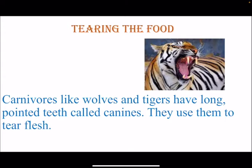Tearing the food. Carnivores like wolves and tigers have long pointed teeth called canines, which they use to tear flesh. You can see in this picture that in both the upper and lower jaws there are two long pointed teeth. They are called canines and are used to tear flesh.